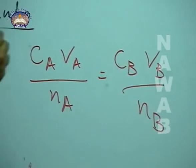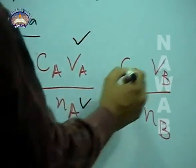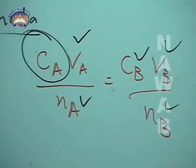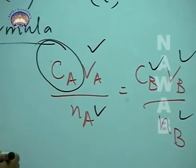In this you know that all these things are given here. Put these values and find the value of CA. How can you find CA?